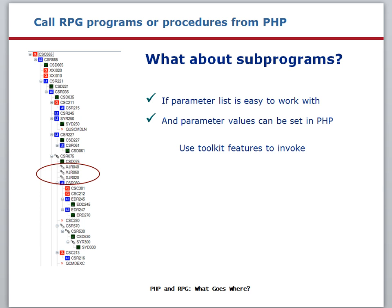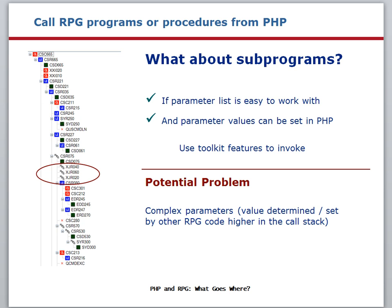When looking into calling RPG or CL programs from PHP, you need to consider the parameter list. If the parameter list is easy to work with — for example, containing simple character or numeric data types — and if you can provide valid parameter values within the PHP application, you can use toolkit features to invoke the program. There's a potential problem when calling programs: the program may have a very complex parameter list or complex data types, or it may require specific values that were set by other programs higher in the call stack, meaning that you would need to duplicate the parameter-setting logic within the PHP code. One possible solution would be to create a small RPG or CL wrapper program that calls the program that you want to use. By design, the wrapper program would expose a simple parameter list that you set in your PHP application. Within the wrapper program, you can code business logic to take the incoming parameters from PHP and convert them to the required parameters to invoke the program.